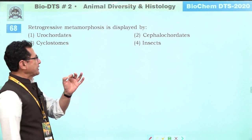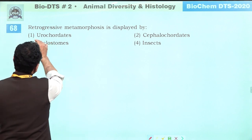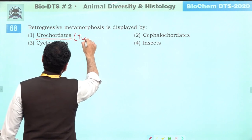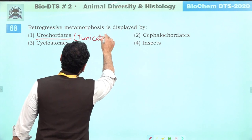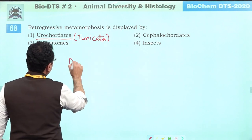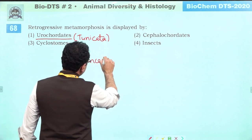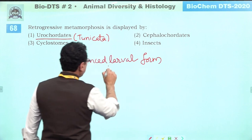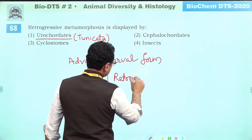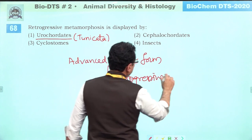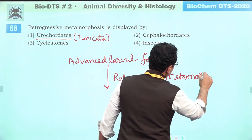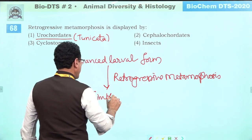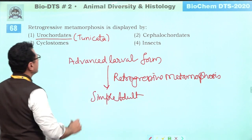Retrogressive metamorphosis is a typical feature shown by tunicates (Urochordata). They show an advanced larval form that undergoes retrogressive metamorphosis and becomes a simpler adult. Answer is one.